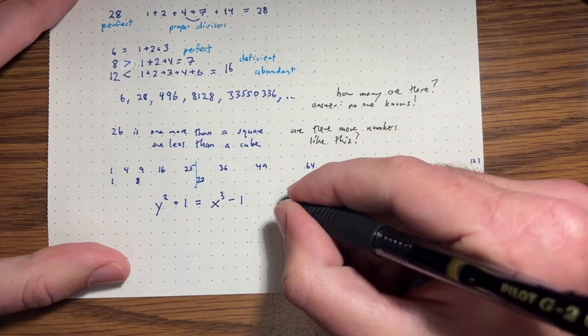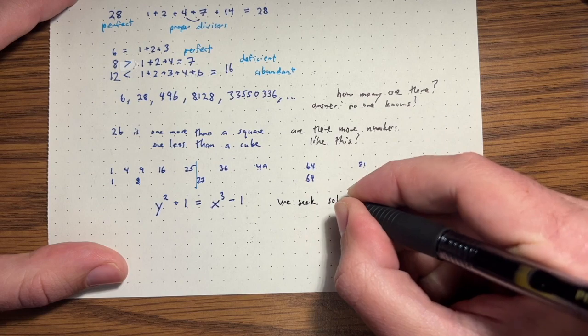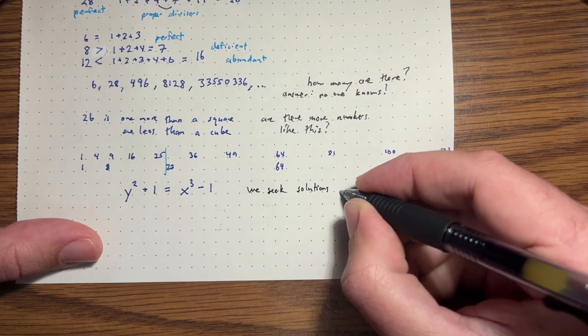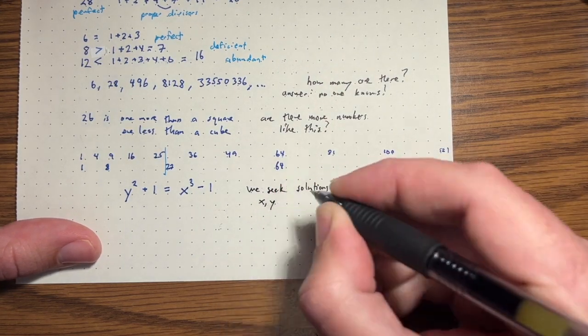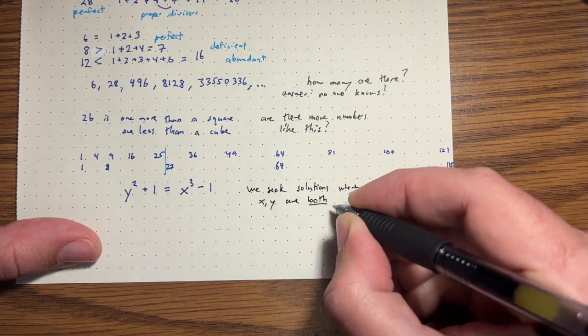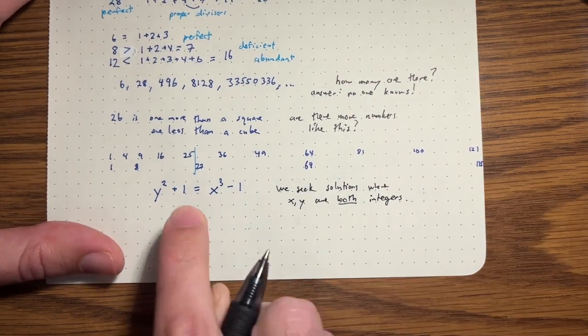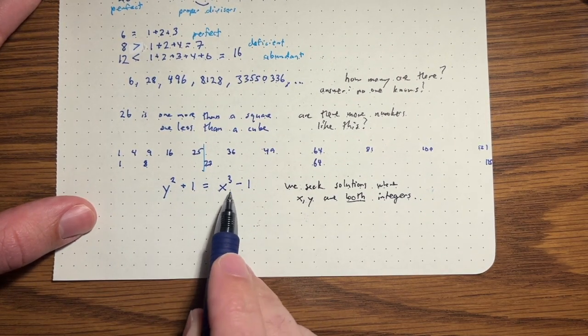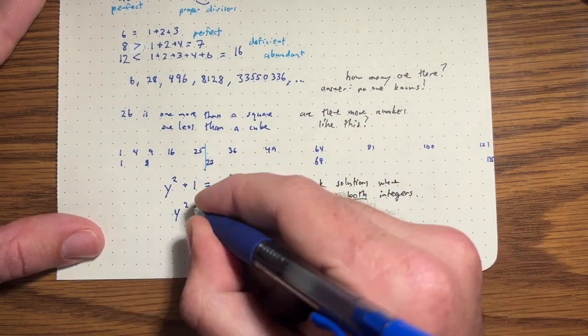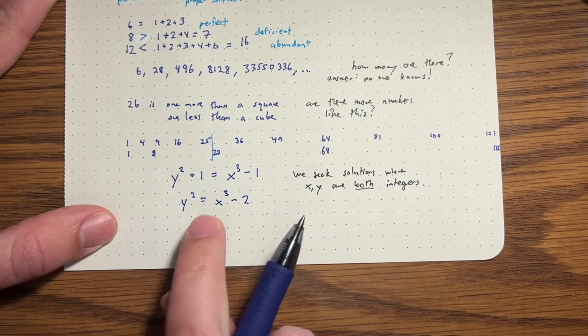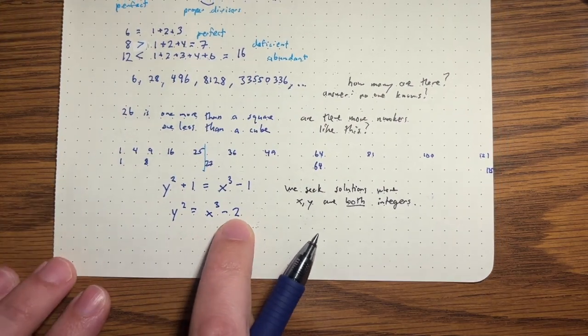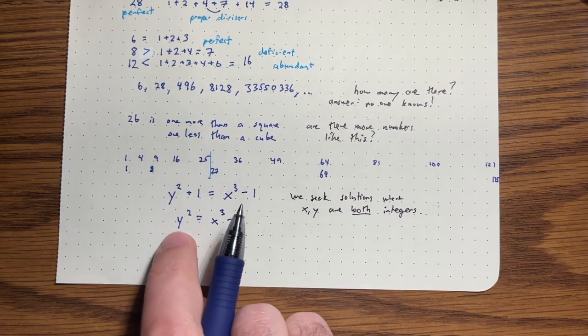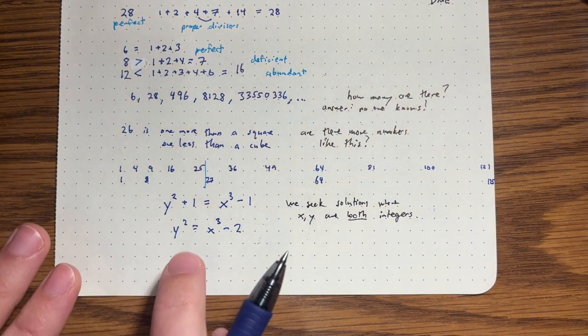We have an equation now. So what are we looking for? We're looking for solutions to this equation where X and Y are both integers. So we seek solutions. So this equation now gives us another number like 26. We seek solutions where X and Y are both integers. It's no problem to find solutions to this, by the way, right? We can set X to be literally anything. And then we'll move this, let's move the one over just to make it look a little nicer.